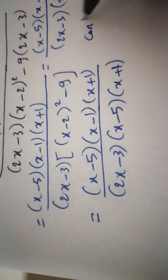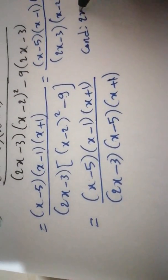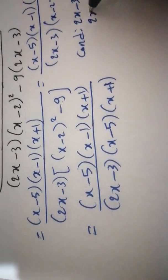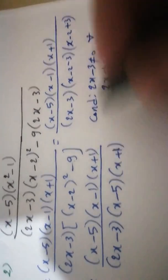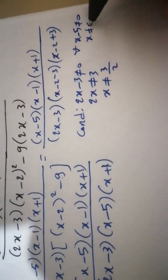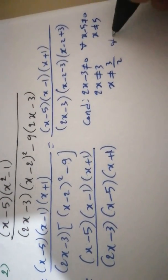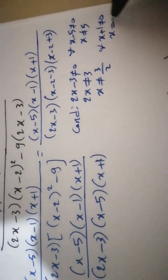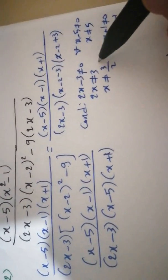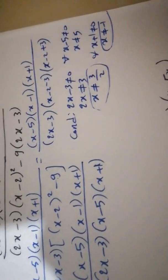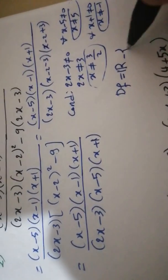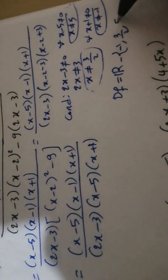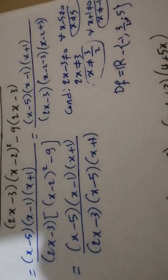Now the condition: the denominator does not equal 0. So (2x minus 3) does not equal 0, meaning x does not equal 3 over 2. And (x plus 1) does not equal 0, meaning x does not equal minus 1. And (x minus 5) does not equal 0, meaning x does not equal 5. The domain of definition is the set of real numbers except minus 1, 3 over 2, and 5.